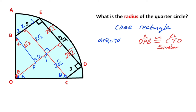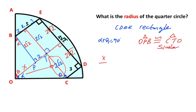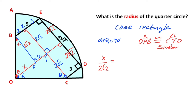I want to represent this length with X. Starting with these similar triangles in our calculations: X, which is opposite alpha, over 2√2, which is the hypotenuse, must equal 2√2, which is opposite theta, over X plus 2, which is opposite theta.